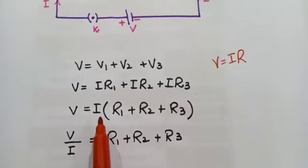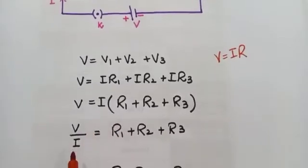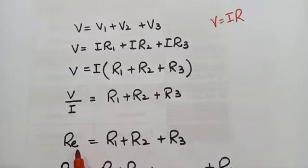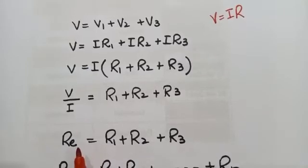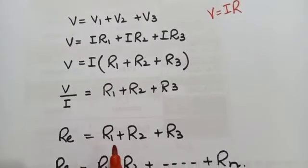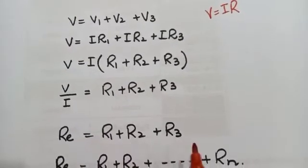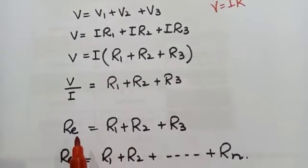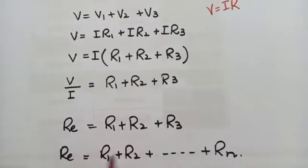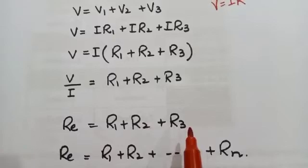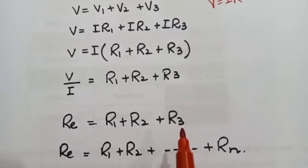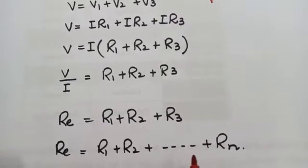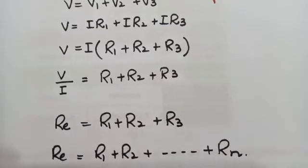By taking I as common, we get V = I(R1 + R2 + R3). Dividing both sides by I gives V/I = R = R1 + R2 + R3. This is the equivalent resistance for three resistors in series. We can generalize it as R_equivalent = R1 + R2 + ... + Rn.